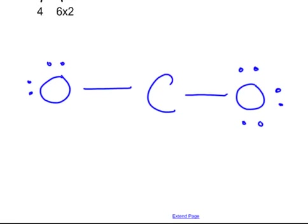Oxygen gets the octet on the outside. Both oxygens are filled: one, two, three, four, five, six, seven, eight — each oxygen has eight electrons, so each oxygen has an octet. We've used eight on one oxygen and eight on the other oxygen — that's 16. We don't have any more electrons left over.